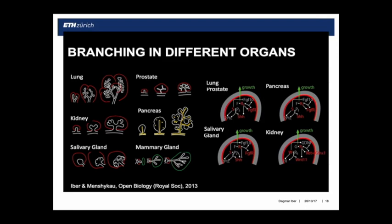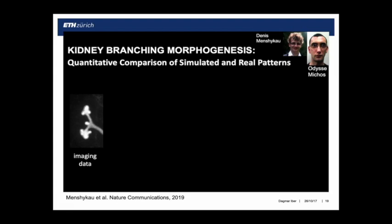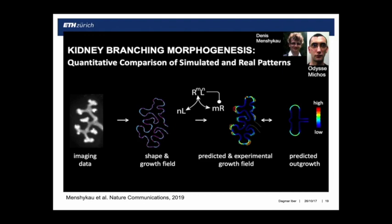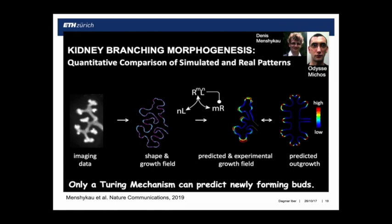The only thing is that it's mathematically the same: the ligand is expressed in the mesenchyme, it signals to its receptor on the epithelium, and upregulates the receptor. So in terms of equations it's 100% the same. We cultured a ureteric bud under the microscope, got the shapes and growth fields, and again — with the Turing mechanism but with none of the other mechanisms — we can predict the points of outgrowth. We can also solve the free boundary problem and get a very similar branching pattern.